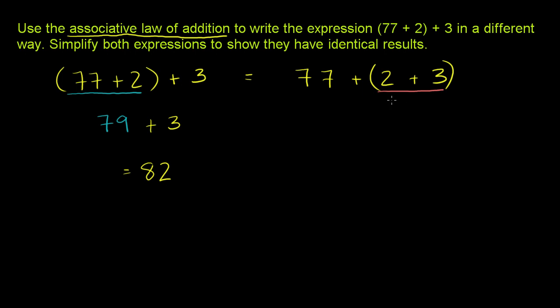So 2 plus 3 is 5. So this evaluates to 77 plus 5. And 77 plus 5, once again, is 82.